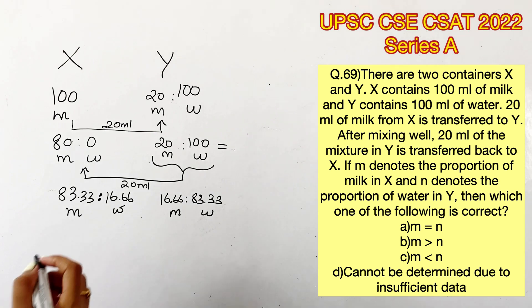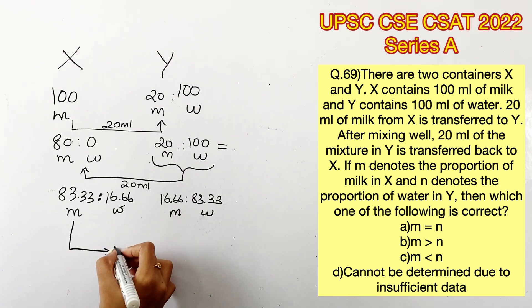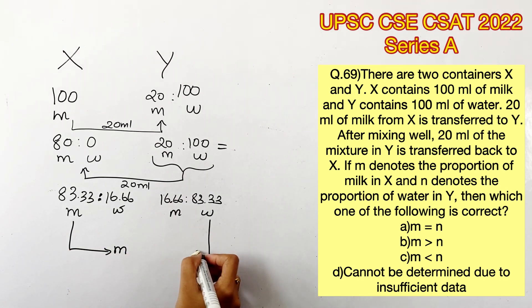Now they are saying that m denotes the amount of milk present in X and n denotes the amount of water present in Y. We can see that both are 83.33, which is equal. Therefore, option A is the right answer: m = n.